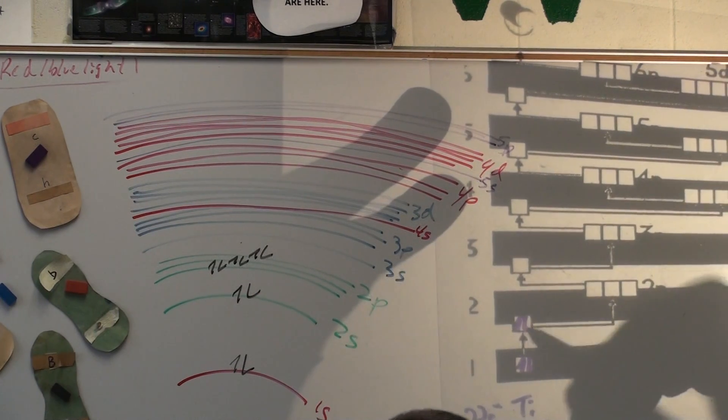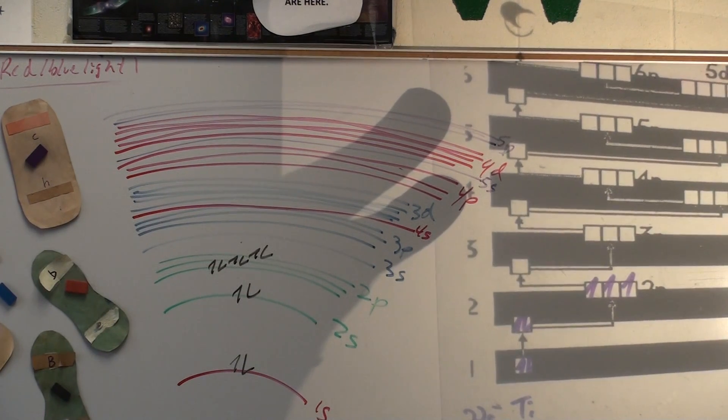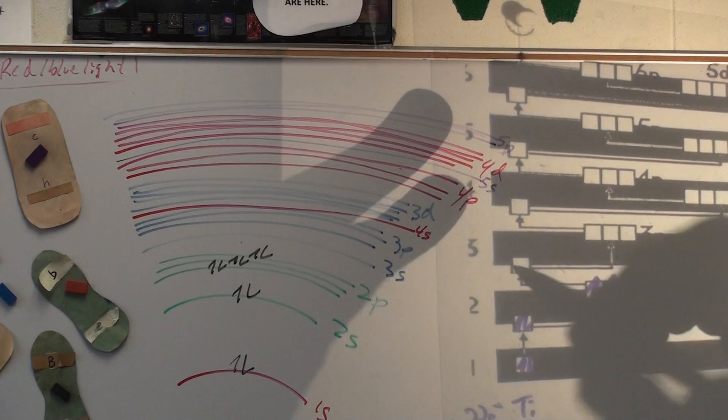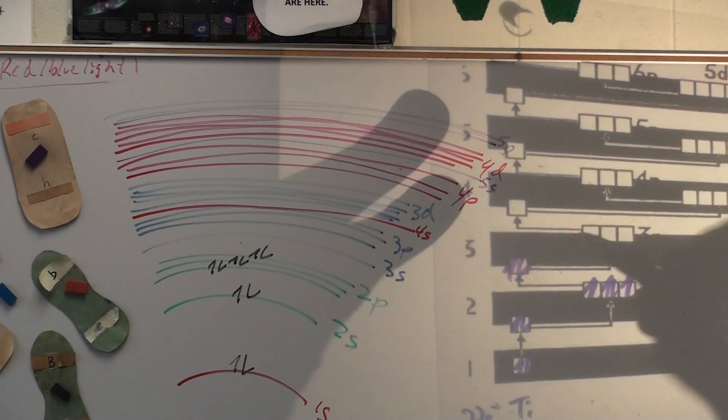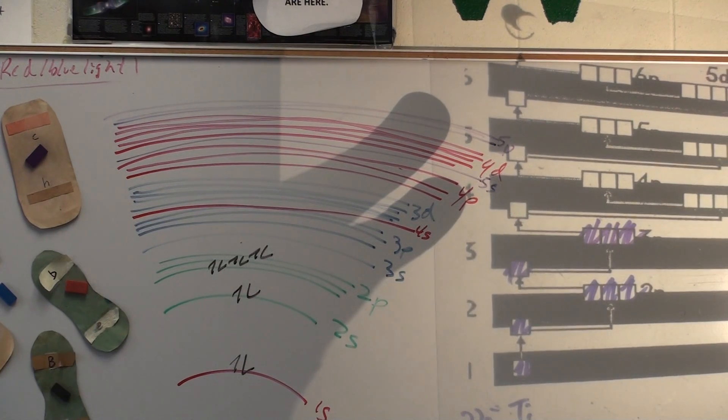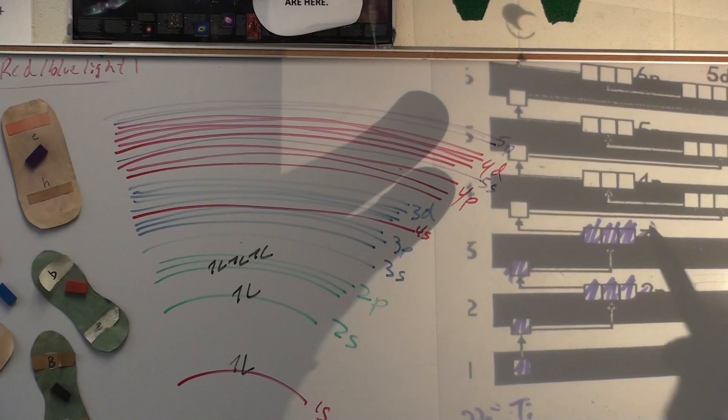Okay, so 22 electrons. One, two, three, four, five, six, seven. One in each. Eight, nine, ten. Eleven, twelve. Thirteen, fourteen, fifteen. Sixteen, seventeen, eighteen.